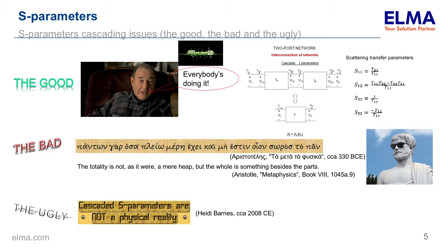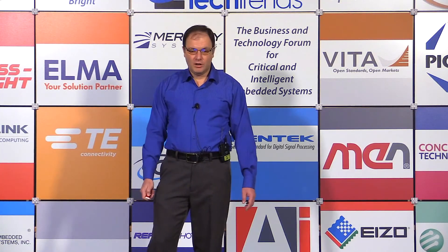There are issues with cascading S-parameters. The algorithm employed is based on the scattering transfer parameters — the T-matrix — which is then transformed back to S-parameters. As Aristotle said, the totality is not a mere heap but something beside the parts. So when putting all these S-parameter blocks together we have to be aware that the end result is not a mere sum of all the blocks. And the ugly thing is that the cascaded S-parameters are not a physical reality, to quote Heidi Barnes of Keysight.